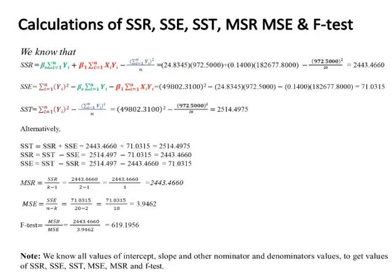SSR = 2443.4660, SSE = 71.0315, SST = 2514.4975. MSR = 2443.4660 (same as SSR since one predictor). MSE = 3.9462. F-test = 619.1956.